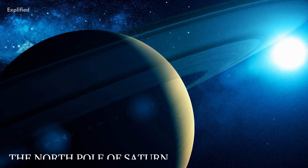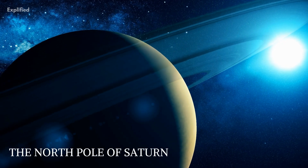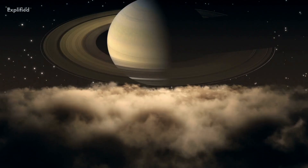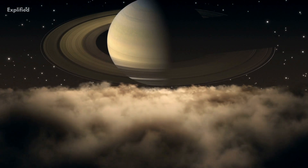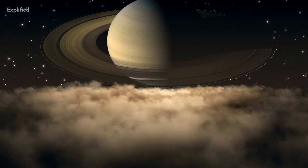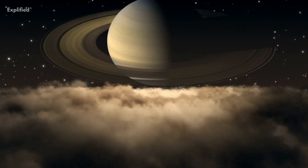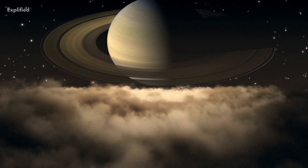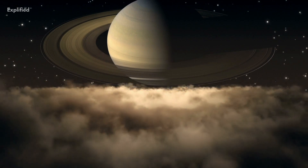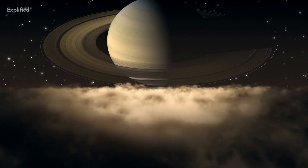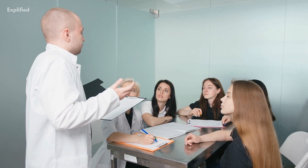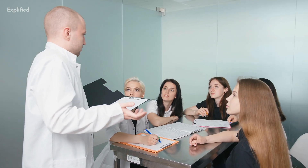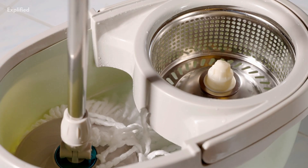If you look at the north pole of Saturn, you would find a hexagonal structure, which is basically a huge cloud with a side itself bigger than Earth's diameter. Scientists explain this phenomenon by comparing it to a bucket.